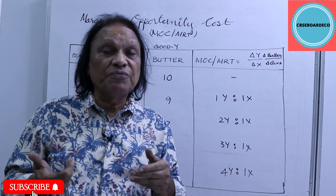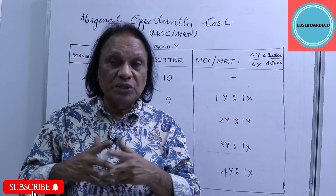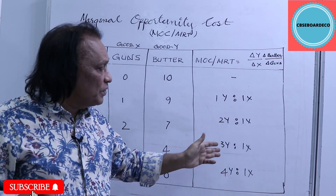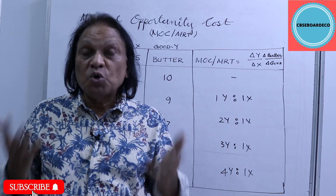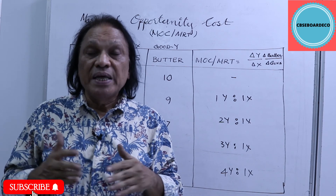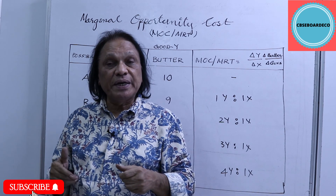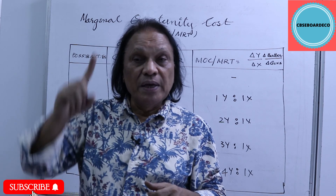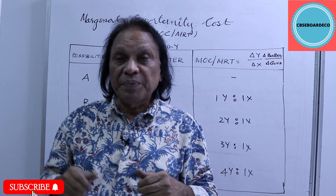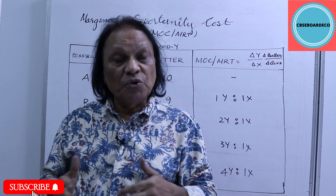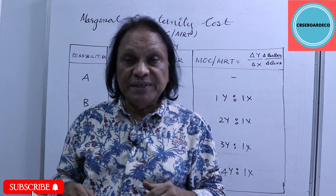Because of increasing MOC — one, two, three, four — the shape of the PPC is concave to the origin. The slope of the PPC is MOC or MRT, and it is concave to the origin. That's all for this video. Don't forget to share, subscribe, like, and comment. Press the bell icon to get future videos which are informative and helpful for examinations. Thank you, bye!